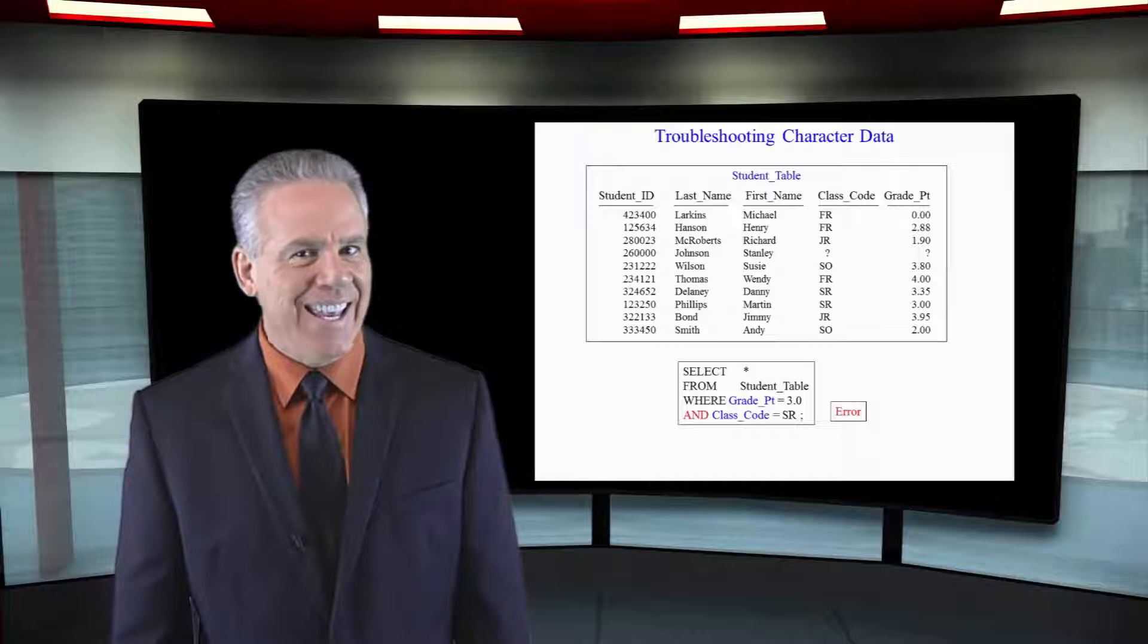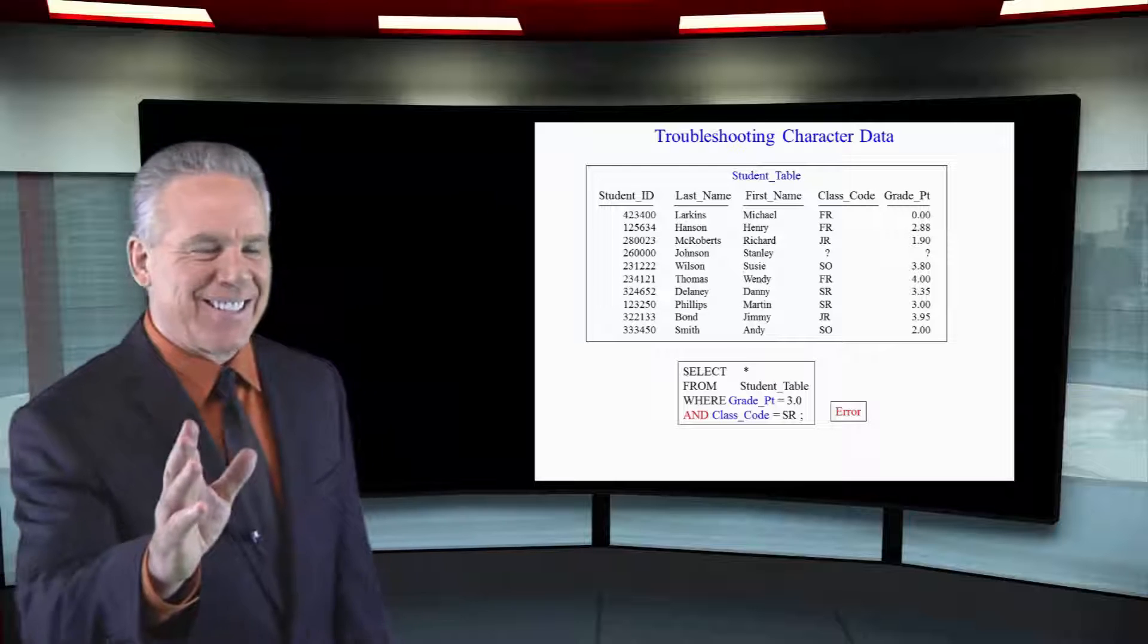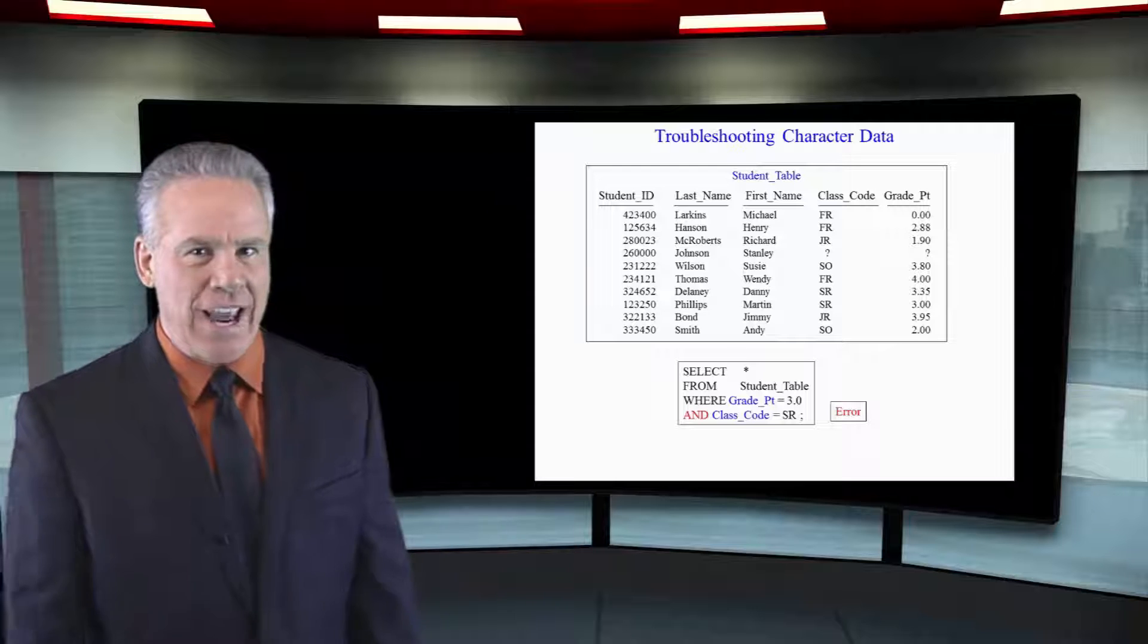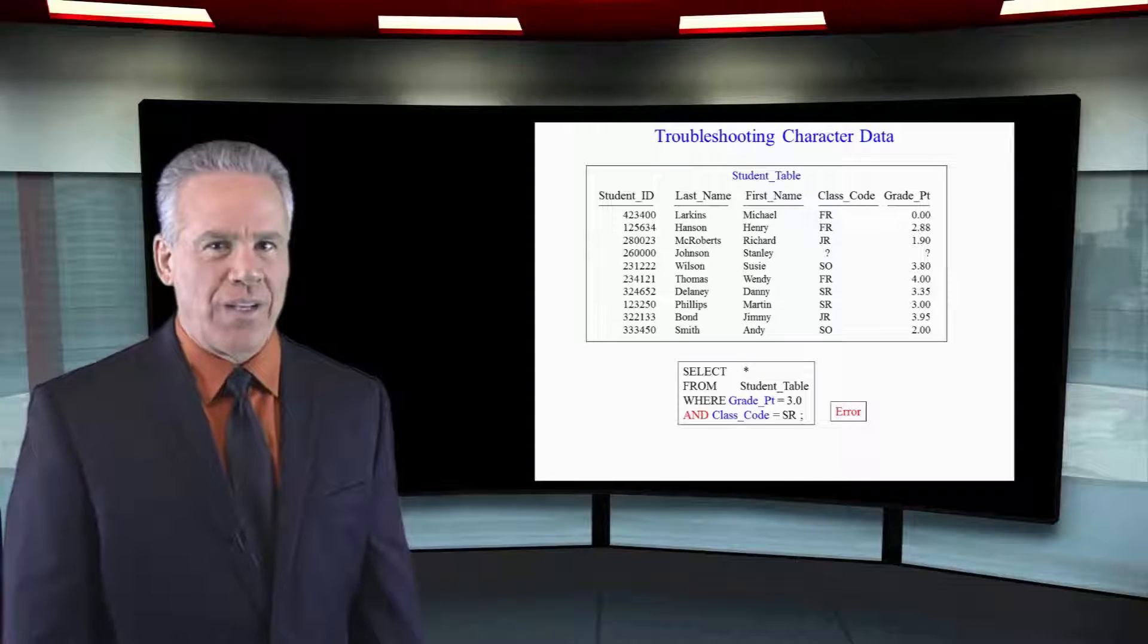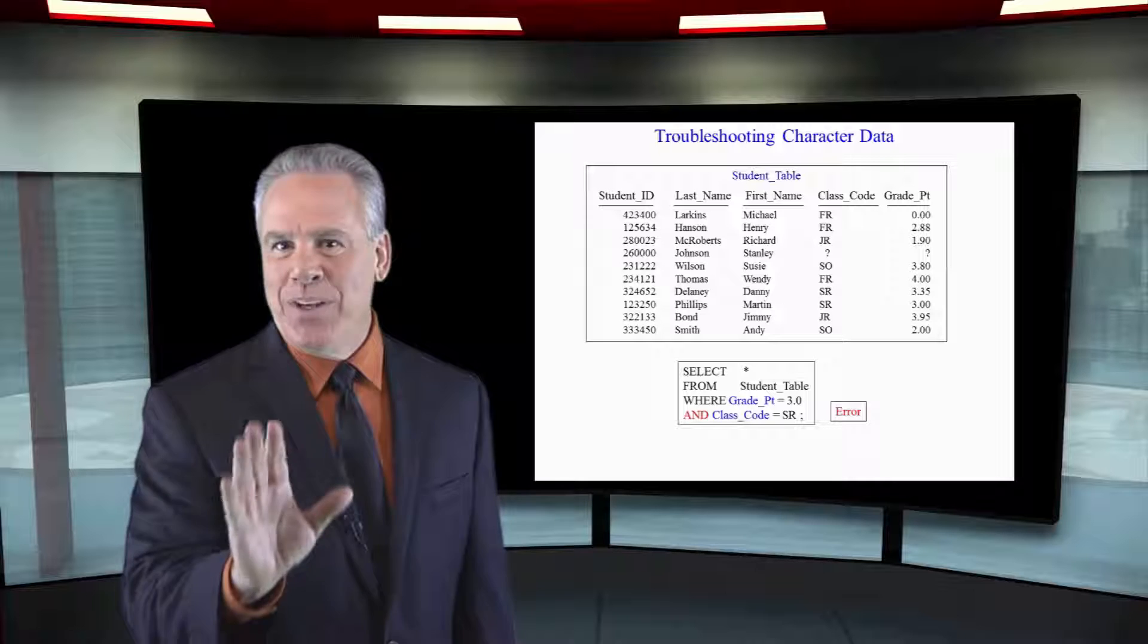I made a little mistakey here. Come on, nobody's perfect, man. Take a look at this. I want you to spot the error. Go with what I taught you. Well, it does say where grade point equals 3.0 and class code equals senior. There's the problem. It doesn't have single quotes around senior, which is character data. It's going to error.